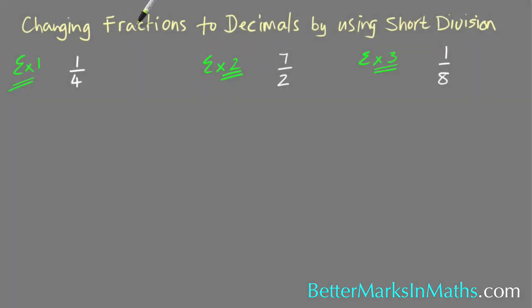This lesson is on how to change fractions to decimals by using short division. That's just one way of doing it—there are a few ways. The main thing you've got to remember, when you are either using a calculator or using short division, is to read this as a division sum, and it's always the top number divided by the bottom number.